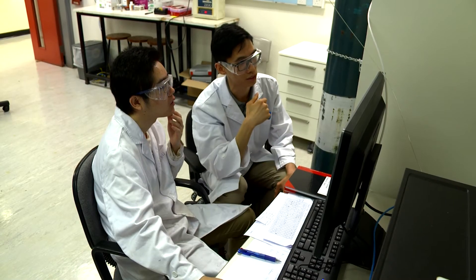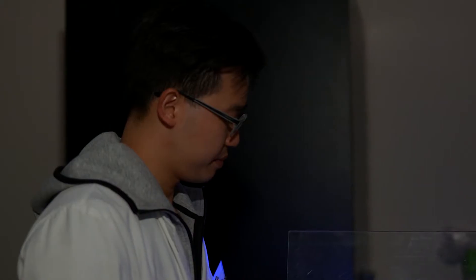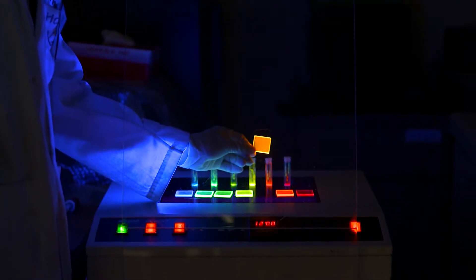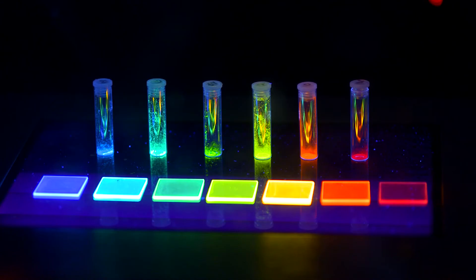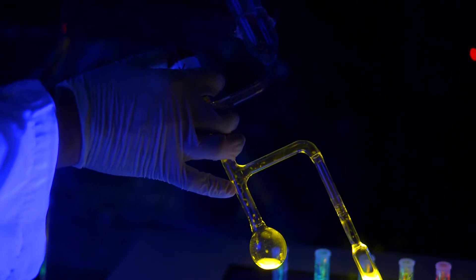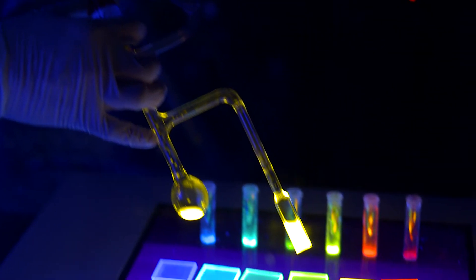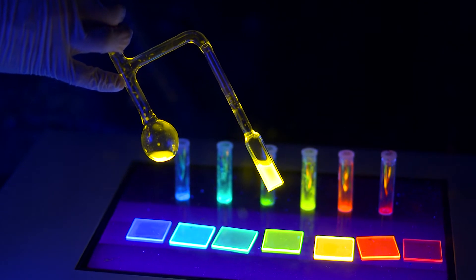My team works a lot on phosphorescent OLEDs, particularly those that are based on gold complexes. If we can make the three primary colors, the red, the green and the blue, then we can make full color flat panel displays or we can mix them to generate white light, or alternatively we can mix the yellow and the blue light to give white light for solid state lighting.